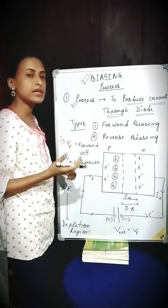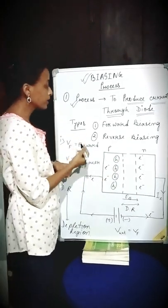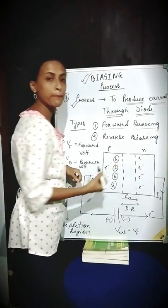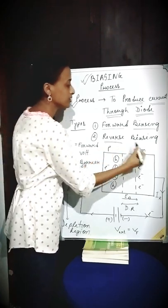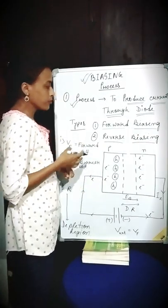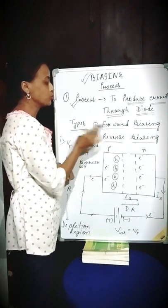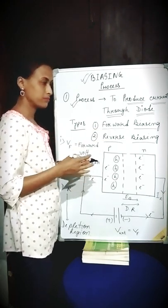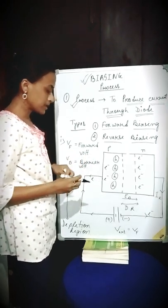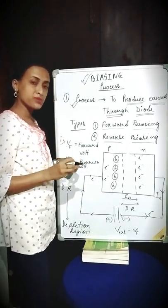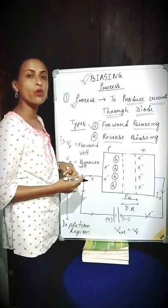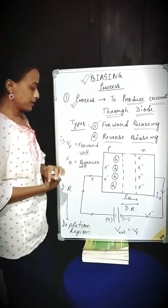Now, what are the types of biasing? There are two types of biasing process. One is known as forward biasing and the second one is known as reverse biasing. I'm going to discuss these two types of biasing separately in my upcoming videos. But in this present video, I will discuss first about the forward biasing process.